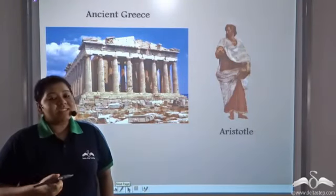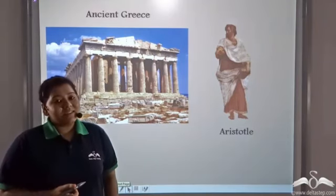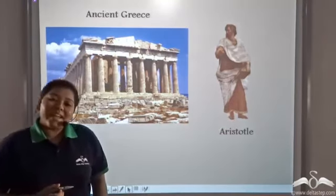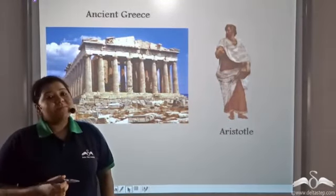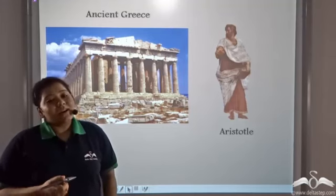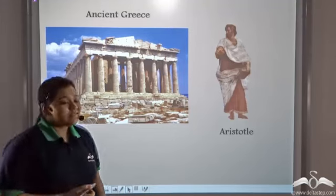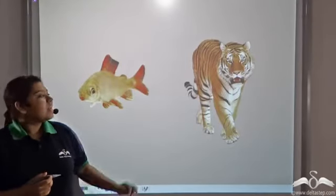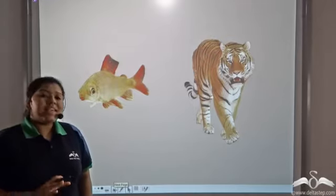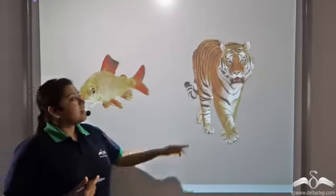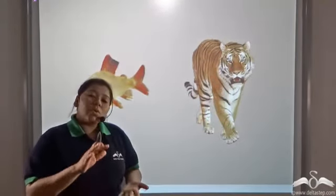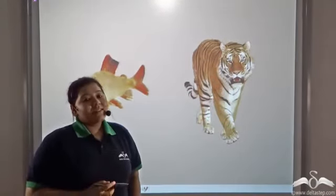Now in ancient Greece, around 300 BC, a Greek philosopher named Aristotle wanted to find out the relationships between these organisms that he saw around in nature. He saw that a few animals like fishes stayed only in the water, whereas a few animals like tigers and lions stayed only on the land. So he put these animals into different groups.